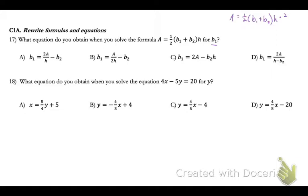So to get rid of the 1 half, I can multiply by 2. And I end up getting 2a equals my base 1 plus my base 2 times my height. Now I'm going to get rid of that height. So I'm going to divide both sides by height. So I get 2a over h equals, and I can drop my parentheses. Finally, I'm going to subtract my base 2. So base 1 equals 2 times the area over the height minus base 2. So that's choice A.